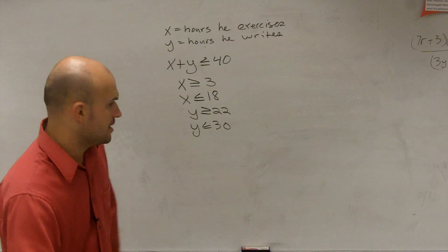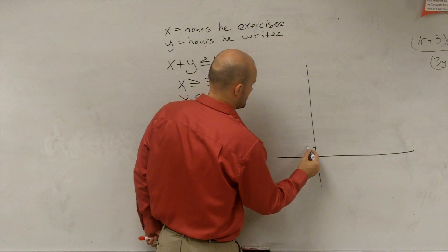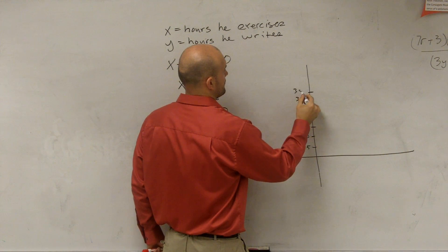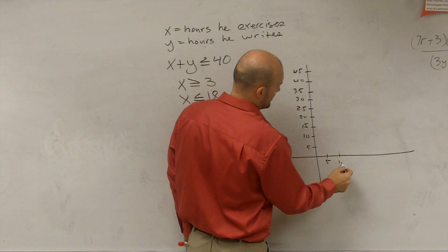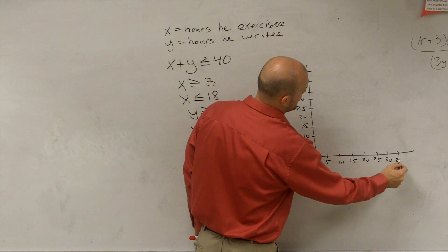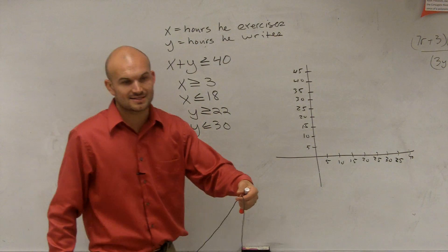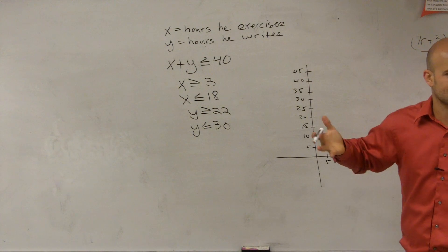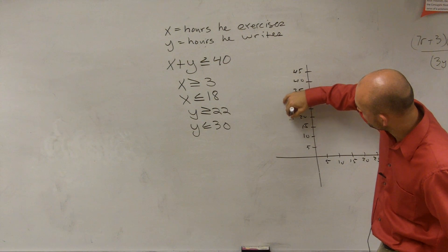You guys have a graph; I'm going to do a makeshift graph here. When creating your graph, make sure you have an x and y axis and that you label them. Since we're not dealing with a dependent or independent variable, it's important to label which axis is which. I'm going to make y the hours he writes and x the hours he exercises.